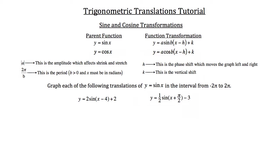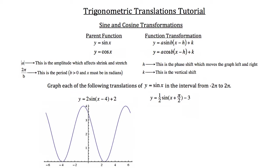Graph each of the following translations of y = sin(x) in the interval from -2π to 2π. I'm going to walk you through the first two transformations. Let's pay attention to the information provided: the a value, b value, h, and k. Our a value occurs right before the sine, so in this case a = 2. Our b would occur right before the quantity (x - 4); since you don't see anything there, our b value must be 1.